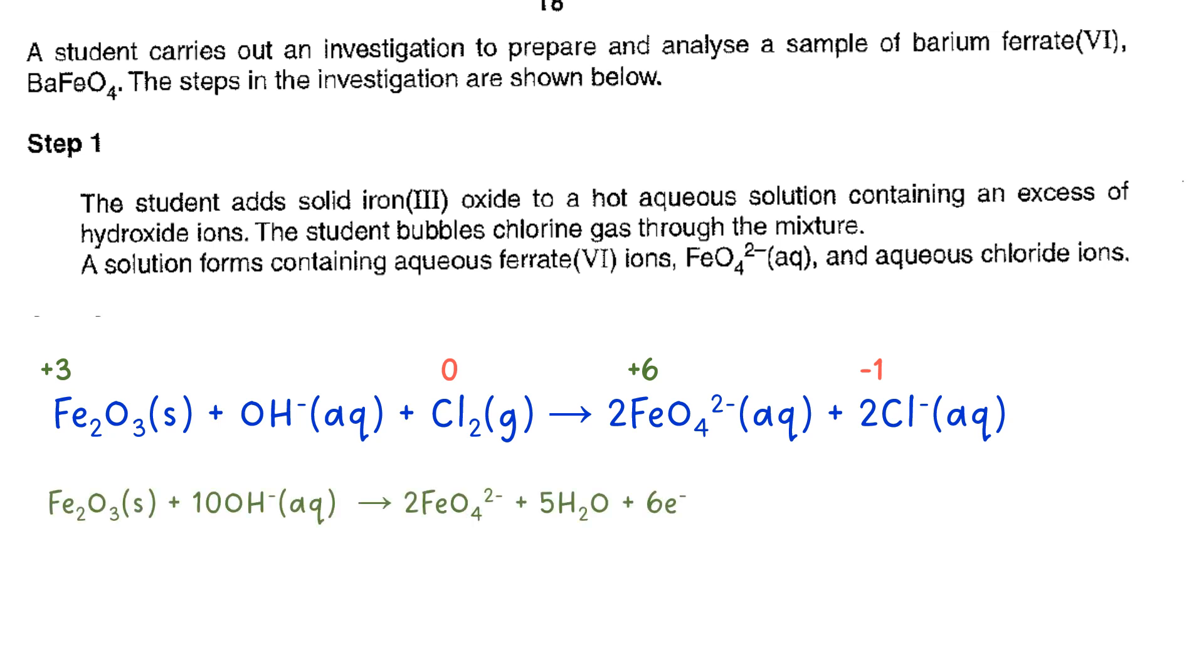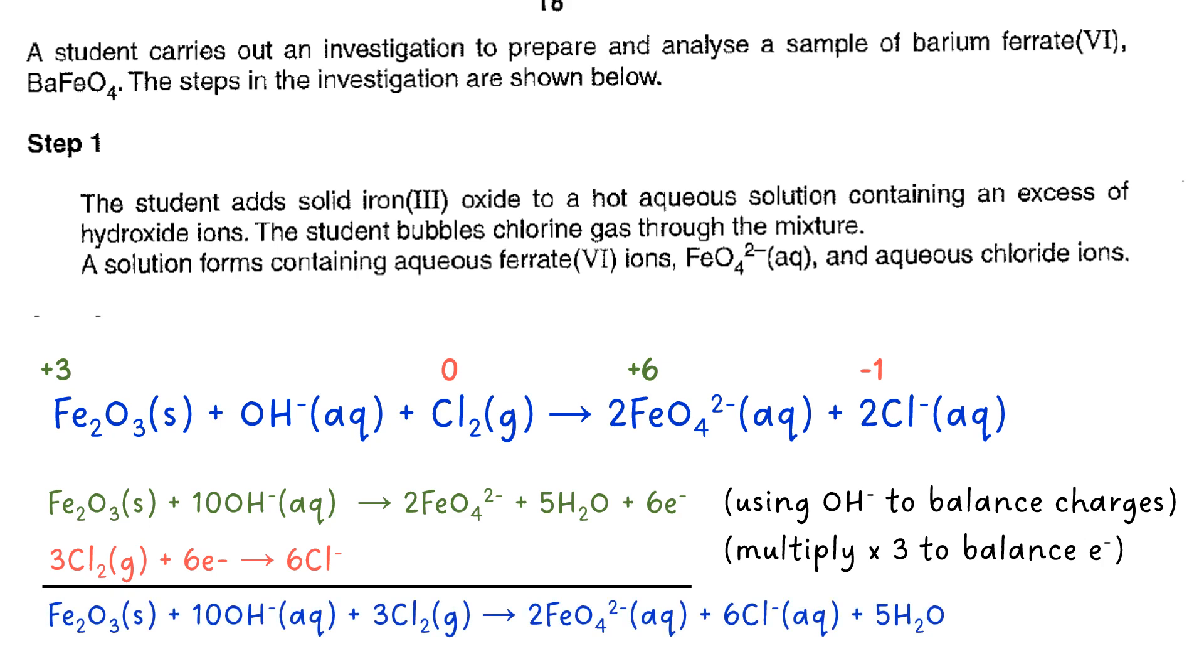So our first half equation you'll see I've suddenly put in 10OH-. Where did that come from? If you look at the charges you'll see six electrons is six minus and two ferrate(VI) ions is a total of four minus. So that's 10 minus on the right hand side. The only species in the left hand side that can be used to balance that is hydroxide, hence why it's 10OH-. So I've multiplied the reduction by three because I need to balance the electrons. The 6E- needs to be cancelled out on both sides. So doing that gives us this equation.